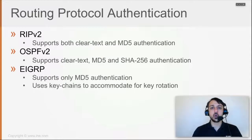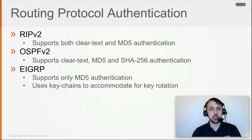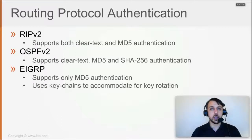The key used to authenticate routing updates can be rotated on a monthly, weekly, or yearly basis based on company policy. Each key defined on a key chain has an accept and send lifetime, which allows key rotation within EIGRP transparently — without breaking the routing protocol or causing EIGRP adjacencies to go down and back up again. Key chaining allows for this rotation to happen on the fly without affecting the routing protocol at all.